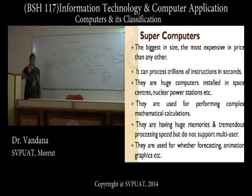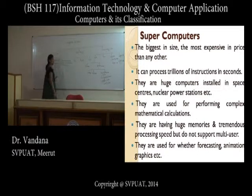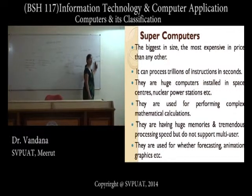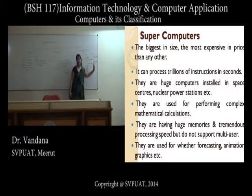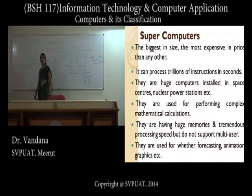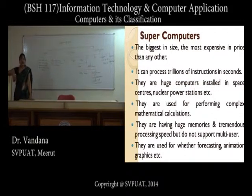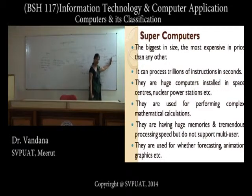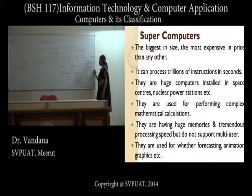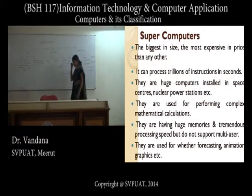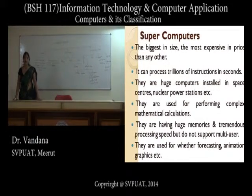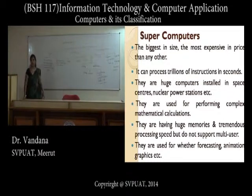The speed of supercomputers is measured in FLOPS — floating point operations per second. Computers performing less than one gigabyte of instructions per second cannot be categorized as supercomputers. They execute millions of floating point instructions per unit of time. Examples include PARAM and Cray, used for weather forecasting, scientific applications, and launching space vehicles.